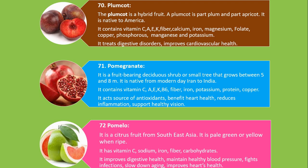Number 71. Pomegranate. It is a fruit-bearing deciduous shrub or small tree that grows between 5 and 8 meters. It is native from modern-day Iran to India. It contains vitamin C, A, E, K, B6, fiber, iron, potassium, protein and copper. It acts as a source of antioxidants, benefits heart health, reduces inflammation, and supports healthy vision.